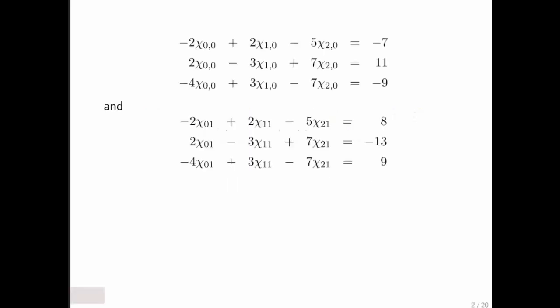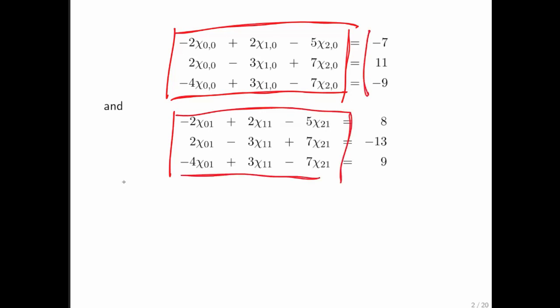Let's have a look at what we mean by that. So here we have two linear systems. Notice that the part on the left, which leads to the matrix, is identical for both of them. And we have different right-hand sides.